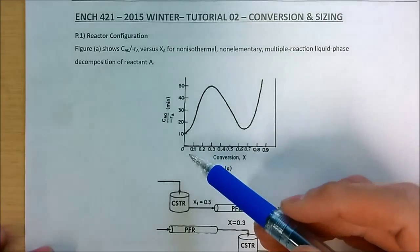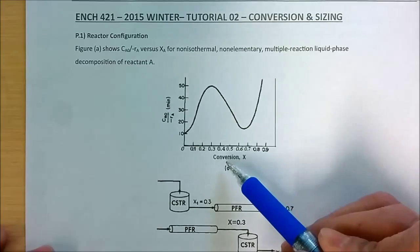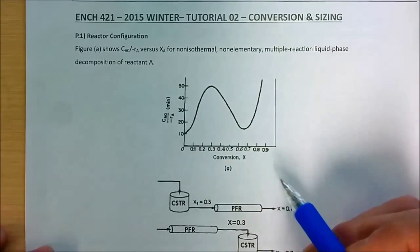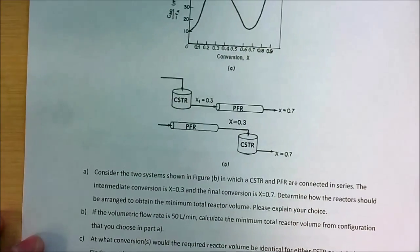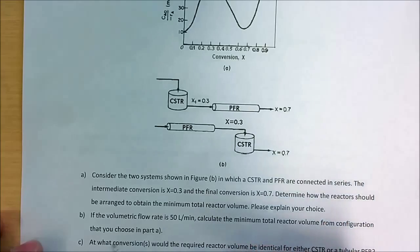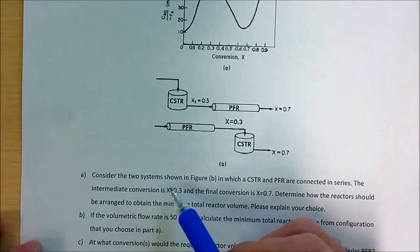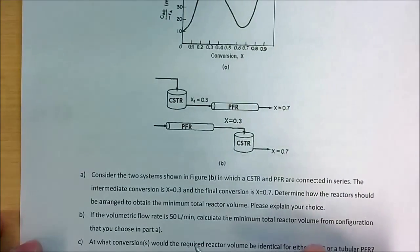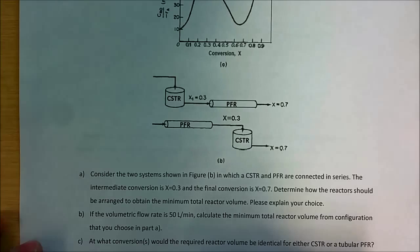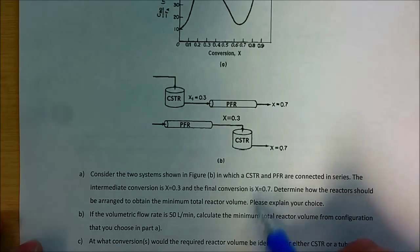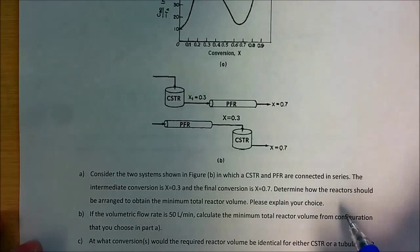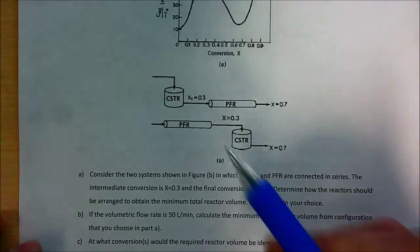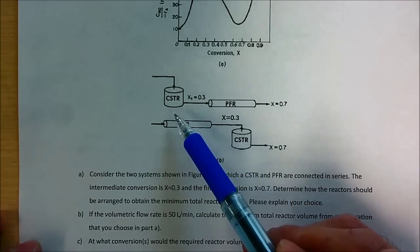In the first problem we have a plot of C_A0 over minus R_A versus conversion for a non-isothermal, non-elementary multiple reaction liquid phase decomposition of reactant A. For part A, consider a system in which a CSTR and PFR are connected in series, with intermediate conversion X = 0.3 and final conversion X = 0.7. Determine how the reactor should be arranged to obtain the minimum total reactor volume.